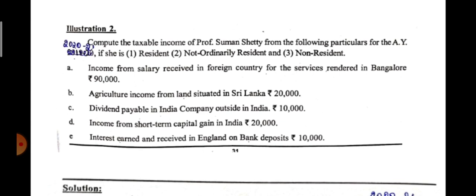Point C: dividend payable by an Indian company outside India, rupees 10,000. The sentence in the question is not proper, but the meaning is dividend payable by an Indian company. If dividend is received from an Indian company — a domestic company — it is exempt from tax. Therefore, in all three columns you are supposed to write 'exempted.' Exempted, exempted, exempted in all three columns.